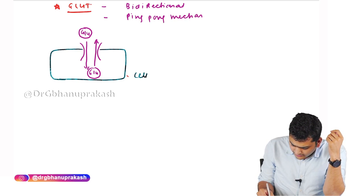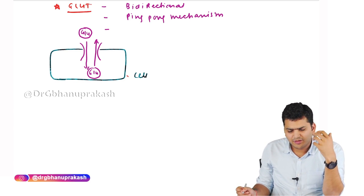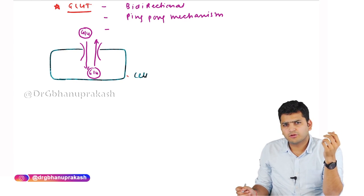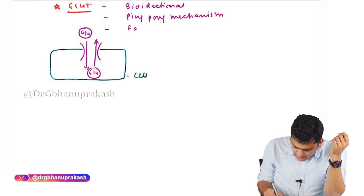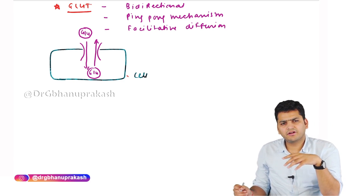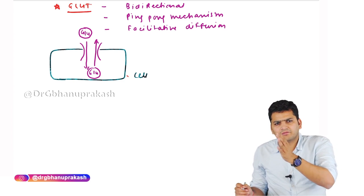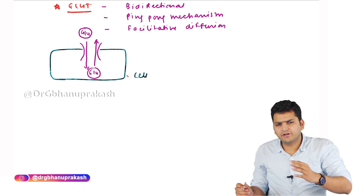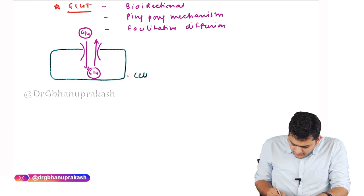GLUT does not require energy. It is a passive type of transport called facilitative diffusion. Diffusion occurs across the concentration gradient, and it is facilitated by the GLUT acting as a facilitator. It does not require sodium.